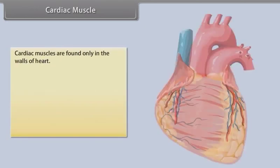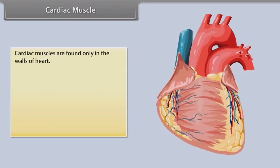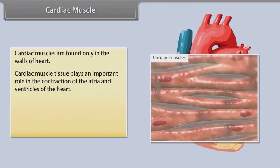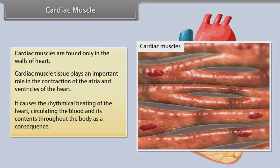Cardiac muscle. Cardiac muscles are found only in the walls of the heart. Cardiac muscle tissue plays an important role in the contraction of the atria and ventricles of the heart. It causes the rhythmical beating of the heart, circulating the blood and its contents throughout the body.